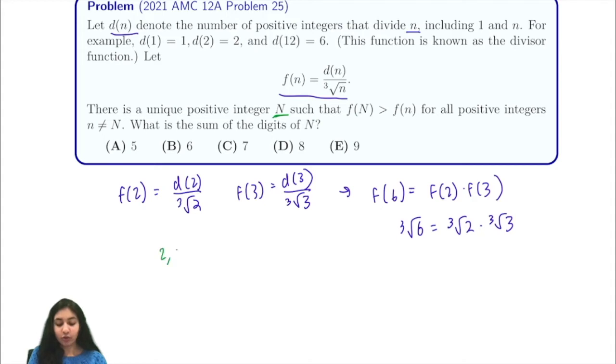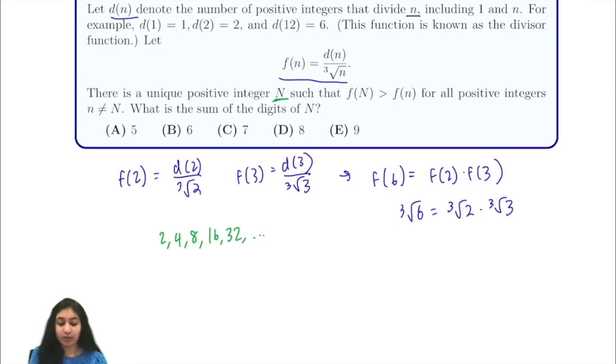We have 2, 4, 8, 16, 32 and so on, and we're trying to find for what value is f(n) the largest. So for f(2) we have 2 over cube root of 2, for f(4) we have 3 over the cube root of 2, for f(8) we have...